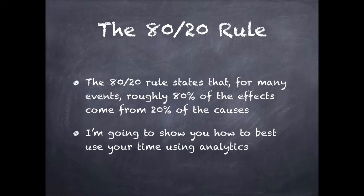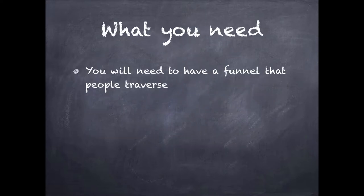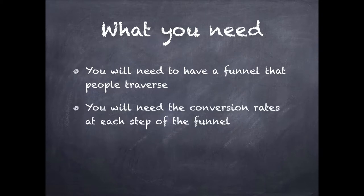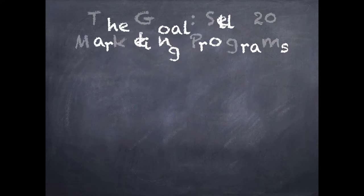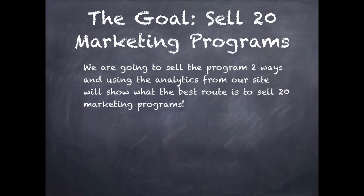I'm going to show you how to do this using your analytics. What you need is a sales funnel that people traverse, the conversion rates at each step of the funnel, and the goal you wish to fulfill. In this case, we're going to use the example of a goal of selling 20 marketing programs. We're going to sell the programs two ways, using the analytics from our site to show the best route to sell those 20 items.